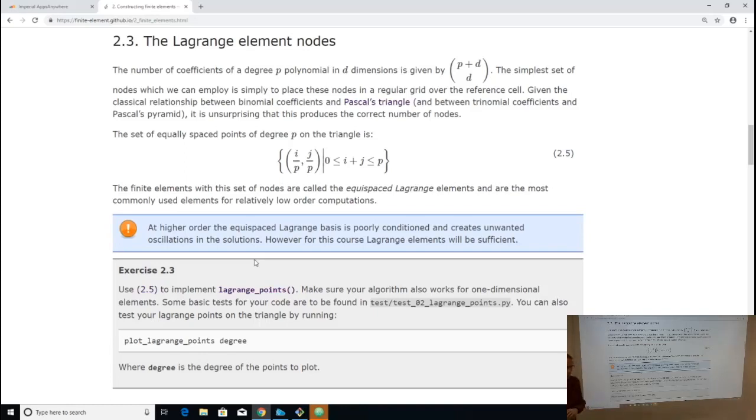If we just regularly place these over the triangle, that's the simplest possible answer. So what that amounts to is I have p plus 1 points along the bottom of the triangle, and unsurprisingly, p plus 1 points is the number of nodes required to produce a p-dimensional polynomial on an interval, because the element, when reduced to any of its edges, still has to be a p-dimensional polynomial.